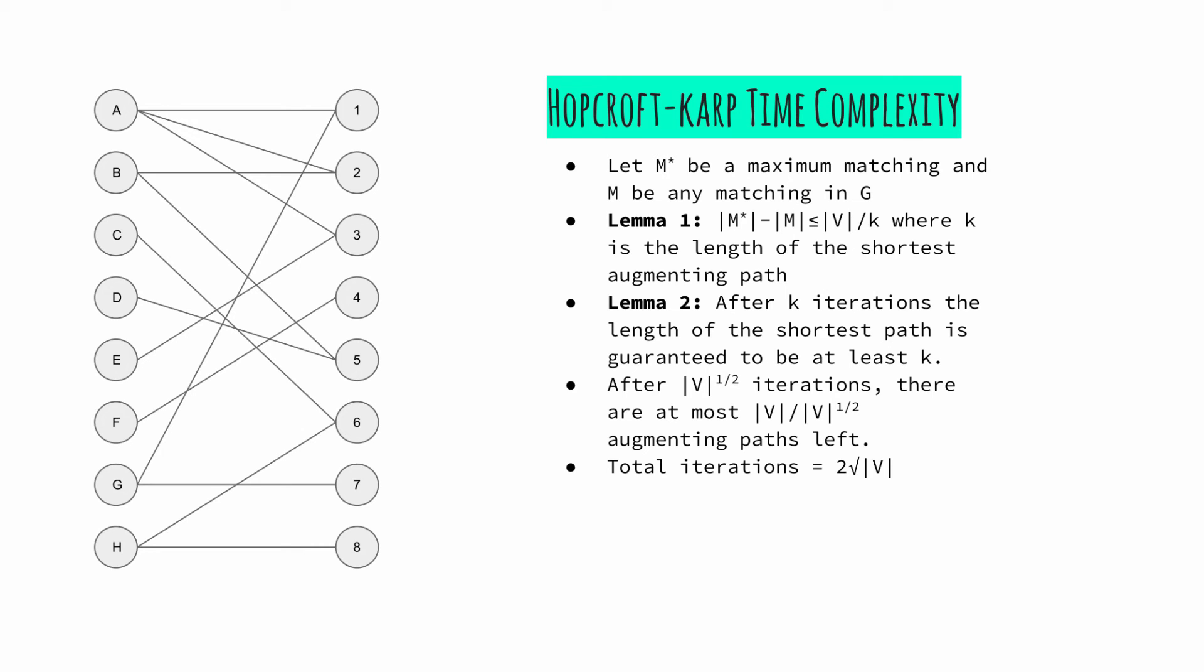Lemma 2 states that after k iterations, the length of the shortest path is guaranteed to be at least k because we increase the length of the path by at least one at each iteration. After square root of v iterations, there are at most v over square root of v augmenting paths left. This sums up to at most two times square root of v iterations.